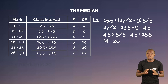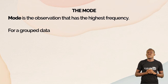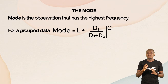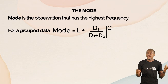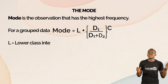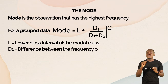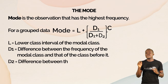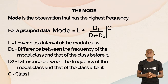Next we move on to our mode. The mode is the observation that has the highest frequency. For group data we use the formula: L + [d1 / (d1 + d2)] × c. Here, L1 is the lower class interval of the modal class, d1 is the difference between the frequency of the modal class and the frequency of the class before it, d2 is the difference between the frequency of the modal class and the frequency of the class after it, and c is the class interval width.